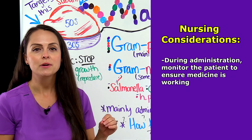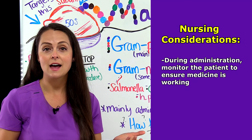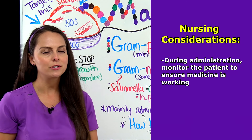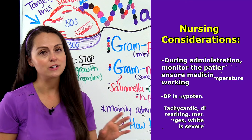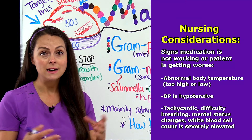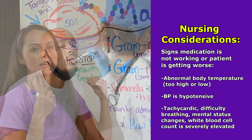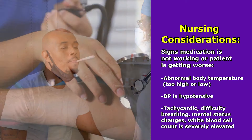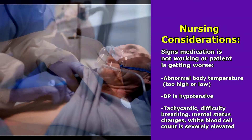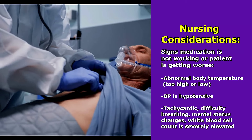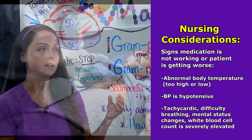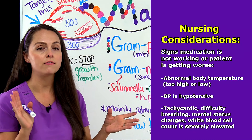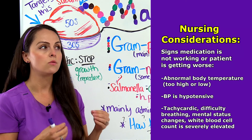During administration, you want to monitor for the effectiveness of this medication — is it actually working to treat the infection? Signs that the medication isn't working and the patient may need something else include abnormal body temperature that is way too high or too low, hypotensive blood pressure, tachycardia, difficulty breathing, mental status changes, and a severely elevated white blood cell count. A normal count is about 5,000 to 10,000, so anything greater than that is a warning sign.